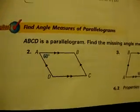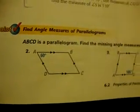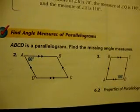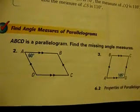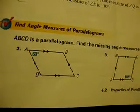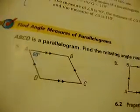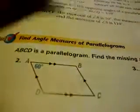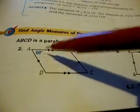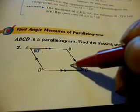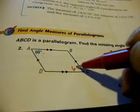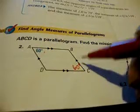I'm going to move on to page 311. I want you all to take a look at number 2 at the bottom. It says ABCD is a parallelogram. Find the missing angle measures. If you remember from our properties of parallelograms, we stated that the opposite angles are congruent. So if angle A is 60, its opposite angle would be 60 as well.